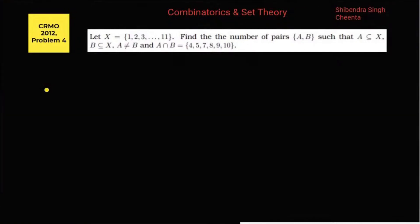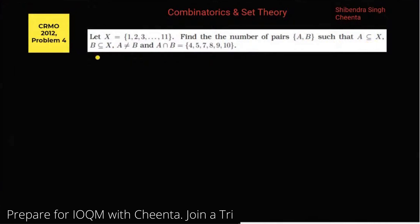Hello, today I'm going to discuss a question from CRMO 2012. This is a question from combinatorics. It is given that X is equal to the set {1, 2, ..., 11}. We'll define the number of pairs of set A comma B such that A is a subset of X and B is a subset of X, where A is not equal to B.